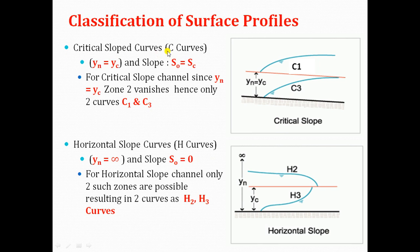Critical slope curves are called C curves and occur in critical slope channels. Here the normal depth equals the critical depth and S0 equals the critical slope SC. Since normal depth equals critical depth, zone 2 vanishes, so only two curves exist: C1, occurring in zone 1 where depth of flow is greater than both normal depth and critical depth, and C3, occurring in zone 3 where depth of flow is less than both. Only C1 and C3 are possible.